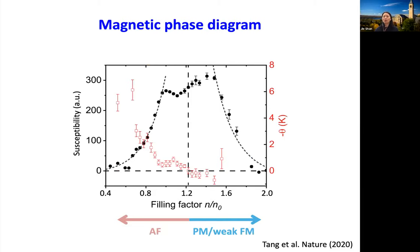We repeat the experiment for different doping. The red symbols show the Curie-Weiss temperature with negative sign — when positive above zero it means antiferromagnetic, and below zero in this plot means ferromagnetic. For filling factor around lower than 1.2, it's antiferromagnetic, and we cross to somewhere close to zero. The susceptibility also diverges near this filling factor. At low temperature this susceptibility enhances significantly, and when you increase temperature this whole enhancement goes away. This may suggest we have a quantum critical point here, but that requires further study.